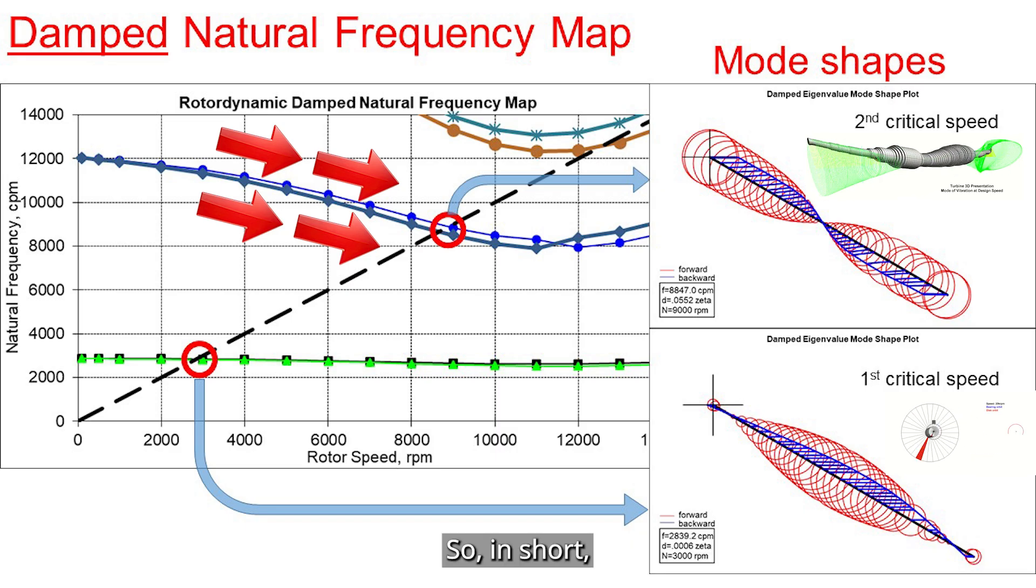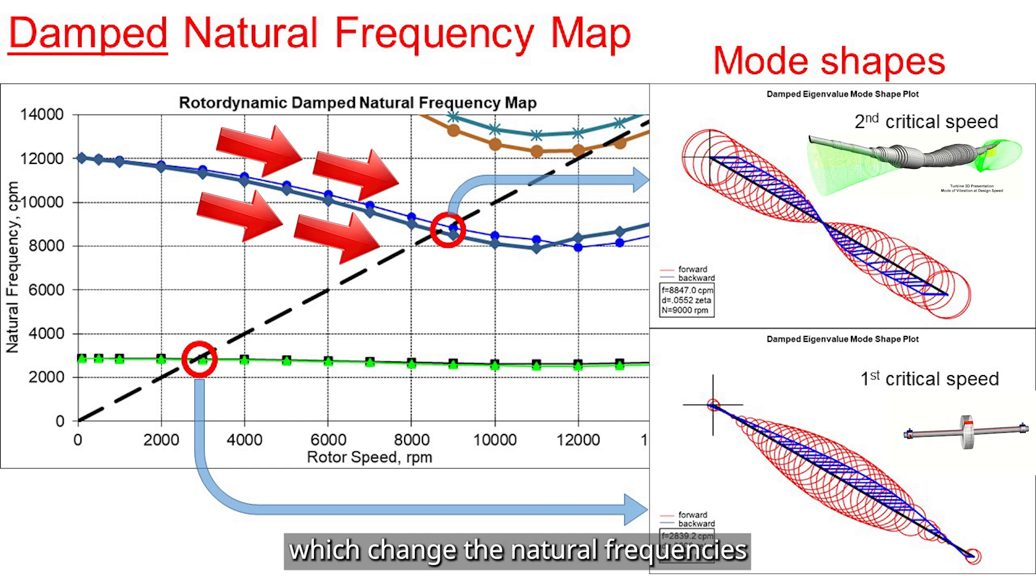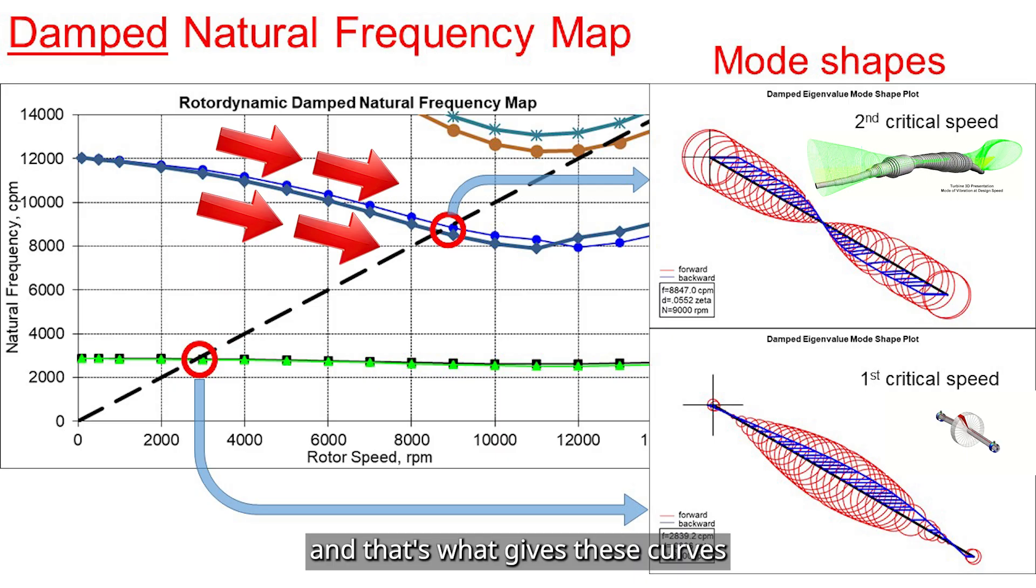So, in short, as the machine running speed changes, the bearing stiffness changes, which changes the natural frequencies, and that's what gives these curves in the damped natural frequency map.